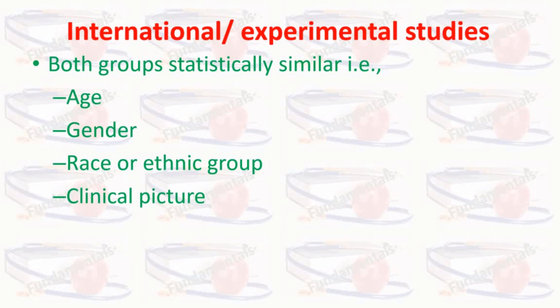To get the true effects of the program or intervention it is necessary to have both a treatment group and a control group. As the name suggests, the treatment group receives the intervention while the control group does not. It is also important that both groups are of adequate size to determine whether an effect took place. While sample size ought to be determined by specific scientific methods, a general rule of thumb is that each group ought to have at least 30 participants.